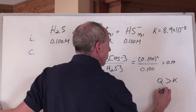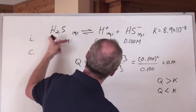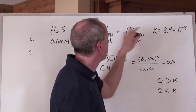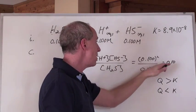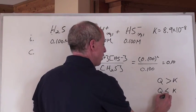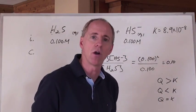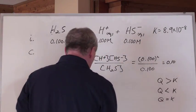Now, conversely, if Q is less than K, you have to shift to the right to be able to make more product because that's in the numerator, and that makes that number bigger. Does that make sense? And by the way, if Q equals K, you don't have to shift anywhere because you're already at equilibrium. Great. So, those are the rules there.